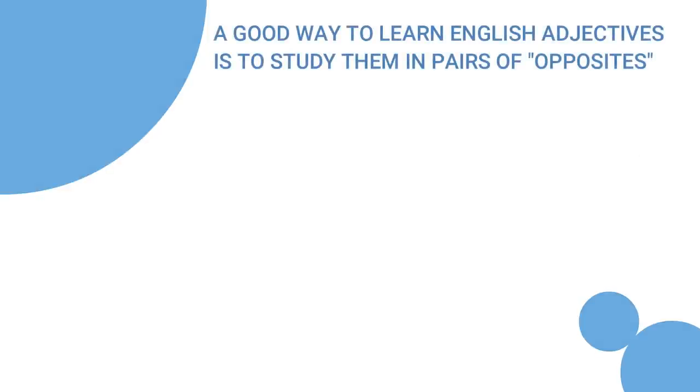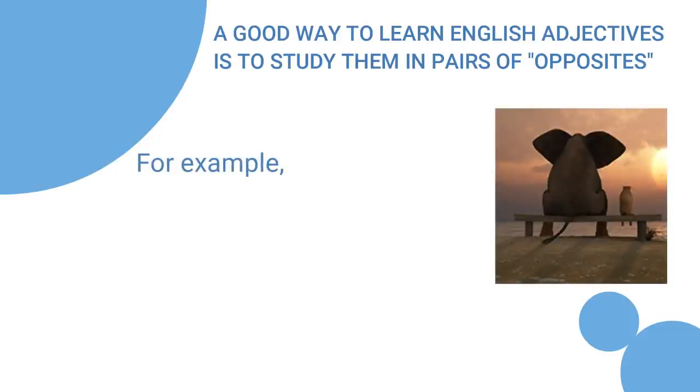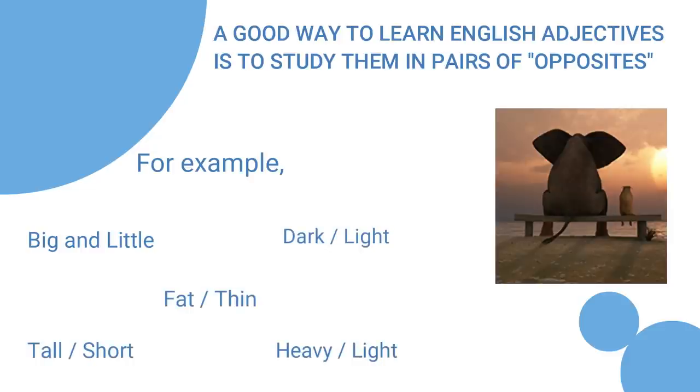A good way to learn adjectives is to study them in pairs of opposites. For example, big and little, dark, light, fat, thin, tall, short, heavy, light.